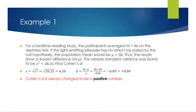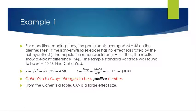Cohen's d is always changed to be a positive number — you need to remember that. From the Cohen's d table, 0.89 is a large effect size. Anything 0.8 or more is large.